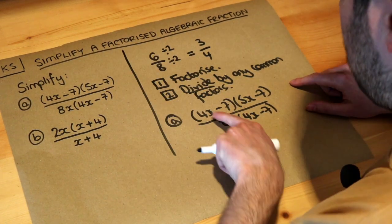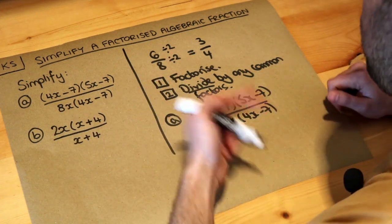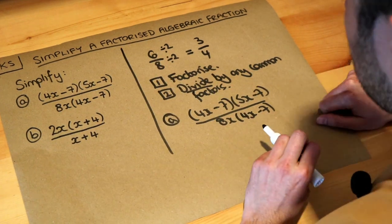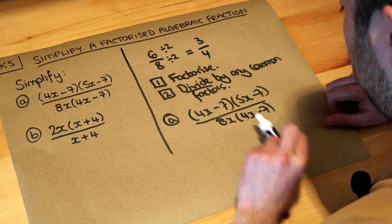As per the title, these have already been factorised for you. In later videos we'll have to do the factorisation ourself. And then you divide by whatever's common. What's common to the top and bottom?